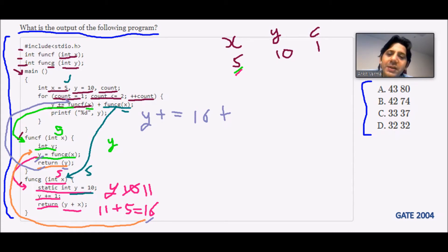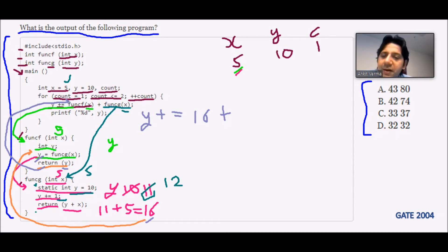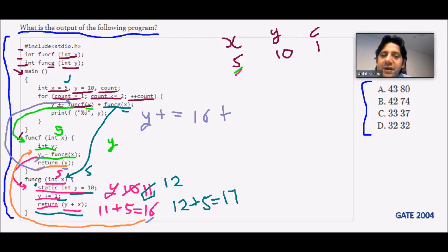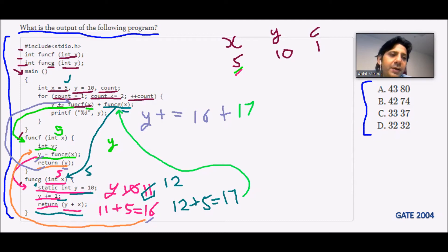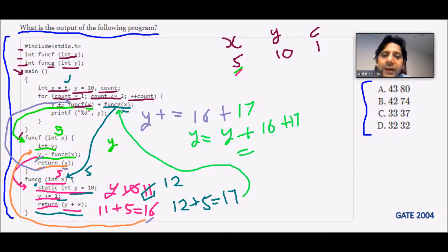Inside function g again, static int y = 10 has no effect now — because static keyword causes the earlier value to persist. So y remains 11. Then y += 1 makes y = 12. Return y + x = 12 + 5 = 17. This 17 is returned back. So now y += 16 + 17 = y + 33, and the earlier y was 10, giving 10 + 16 + 17 = 43.